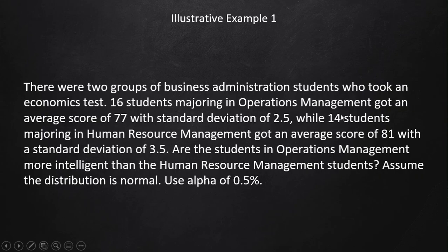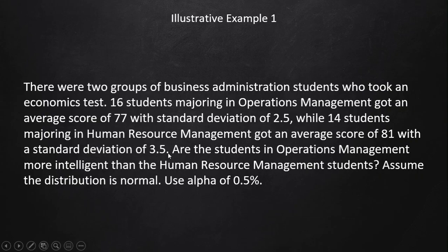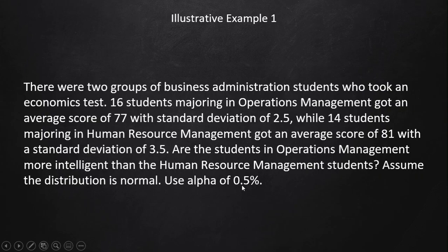We also have 14 students majoring in human resource management — that is our second sample size, n₂ = 14. These 14 students got an average score of 81, which is our second sample mean, x̄₂ = 81, and their standard deviation is 3.5, so s₂ = 3.5. Our problem is to test whether operations management students are more intelligent than human resource management students, assuming normal distribution and an alpha level of 0.05.